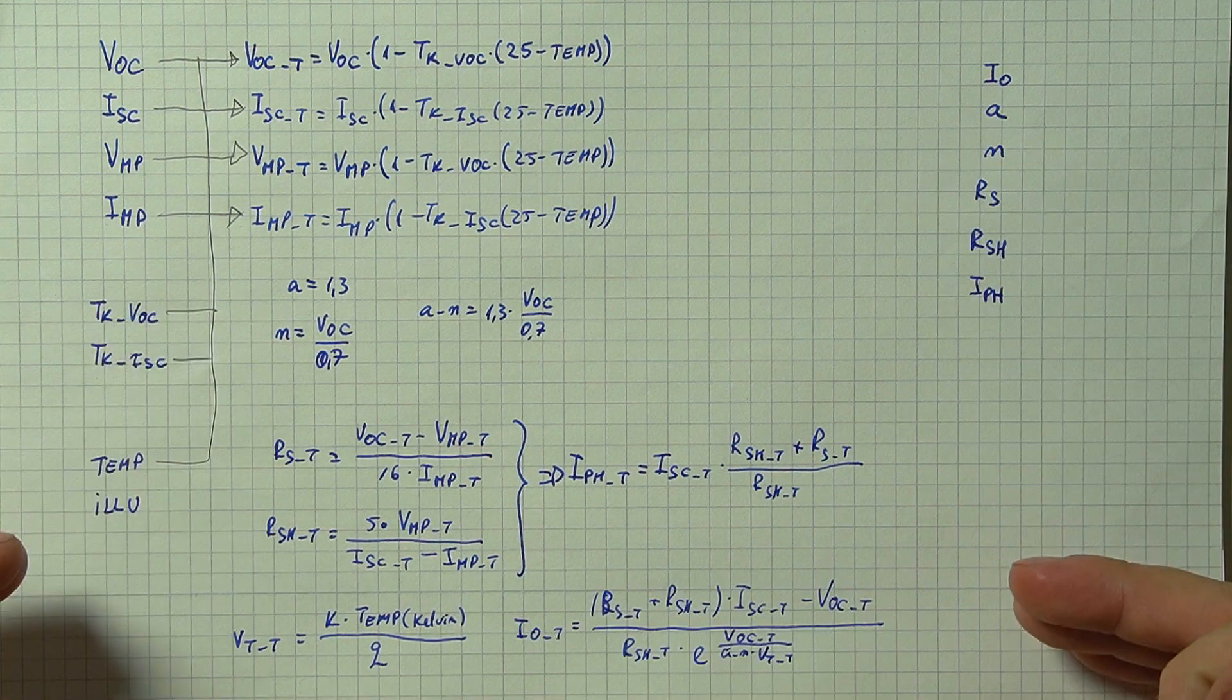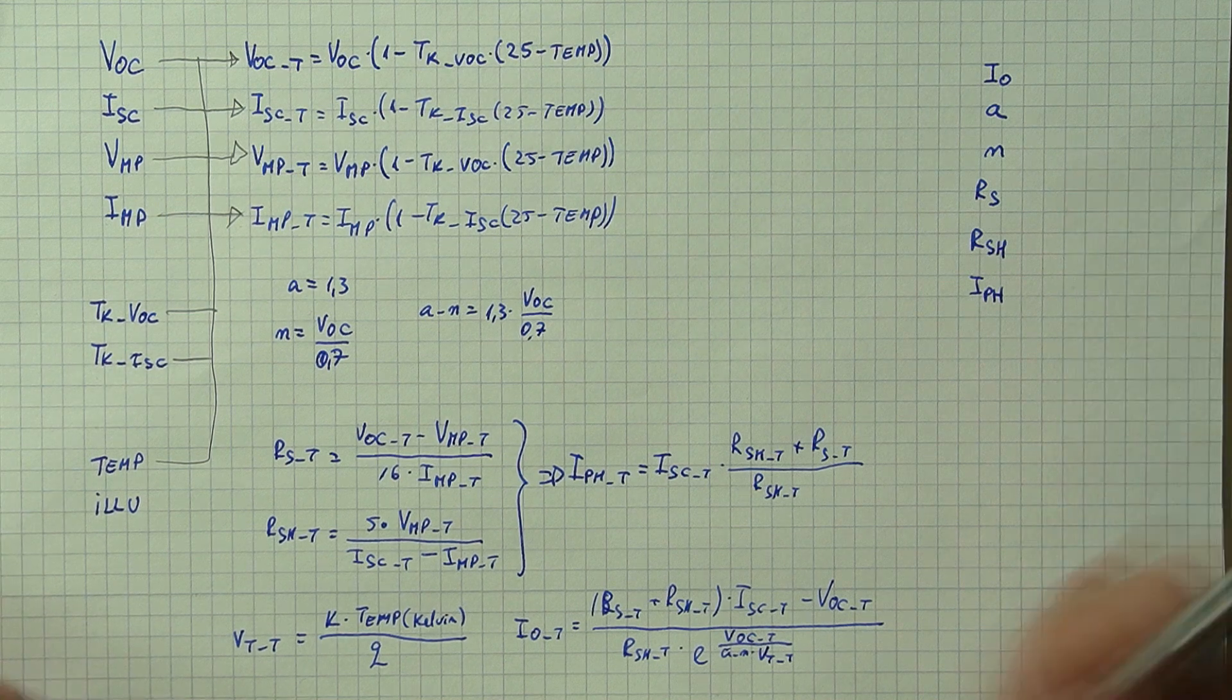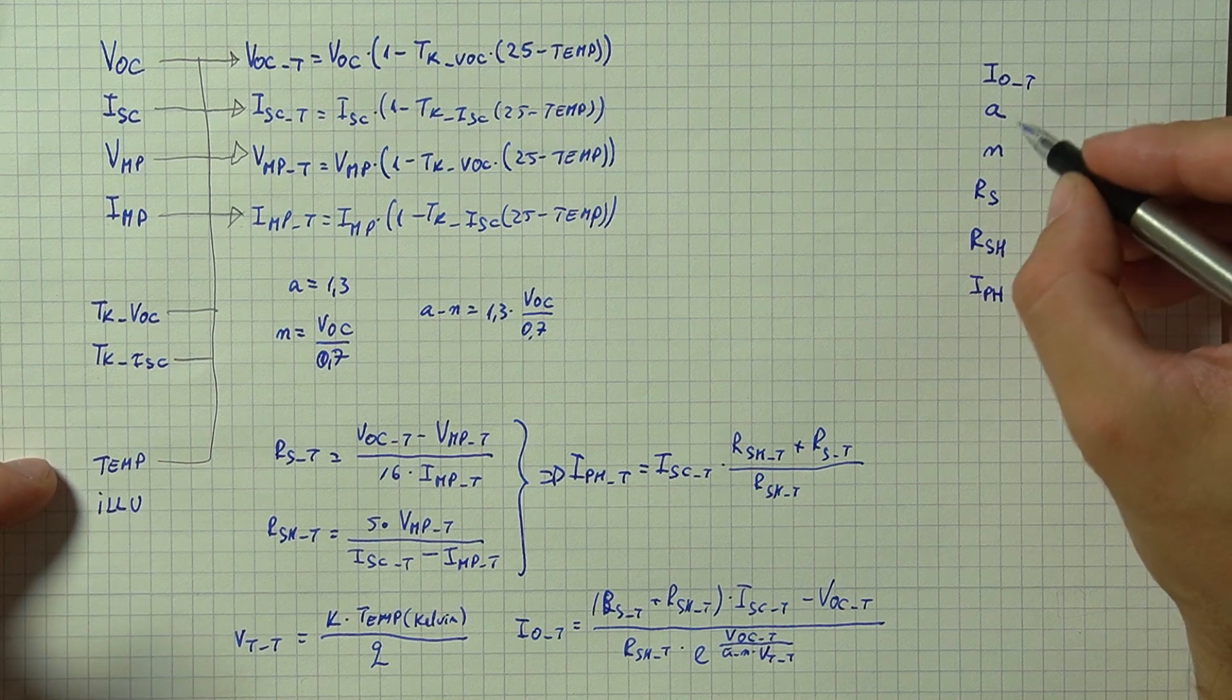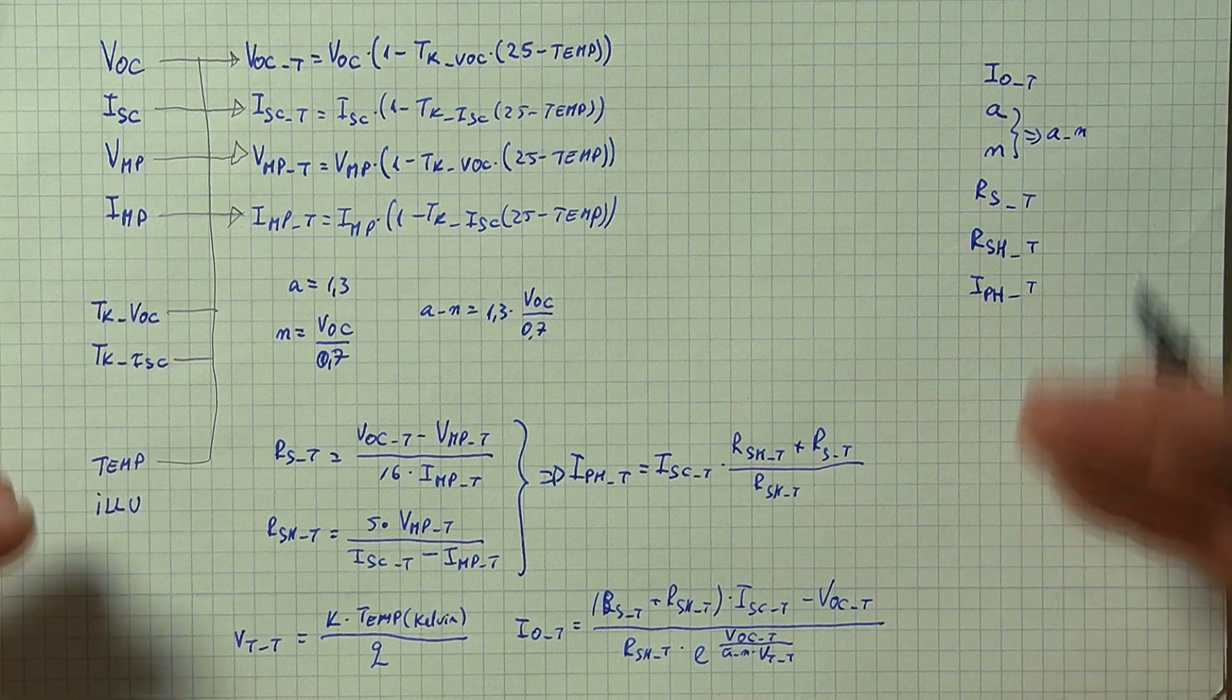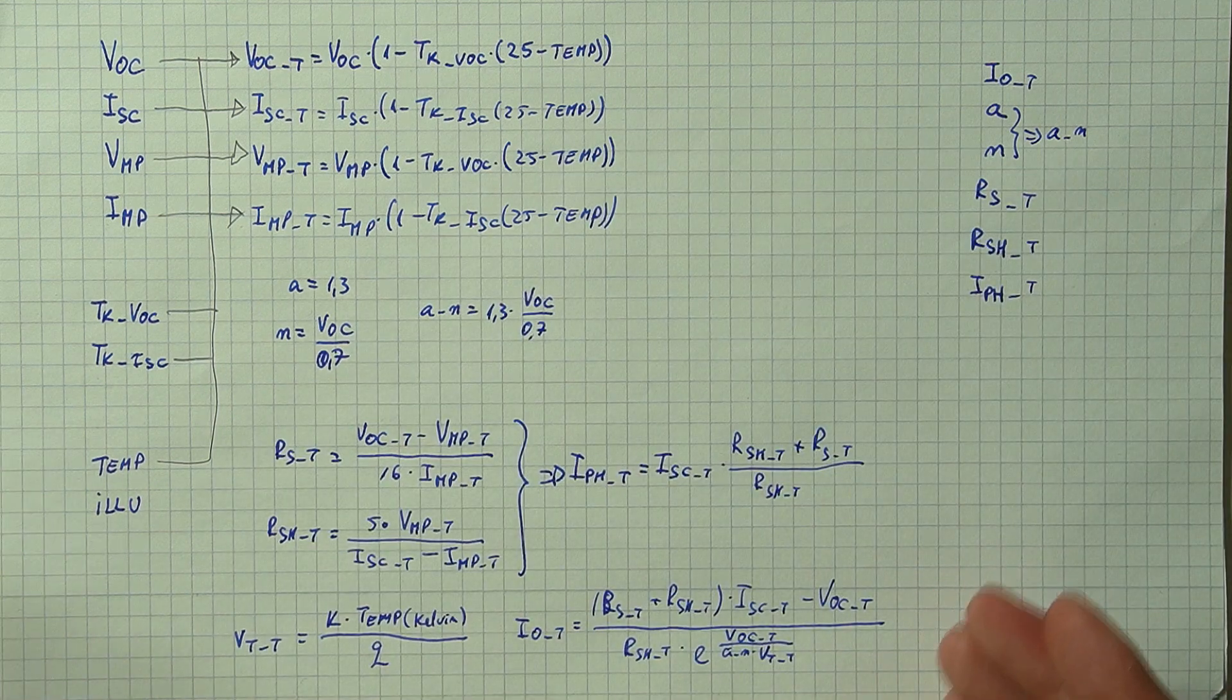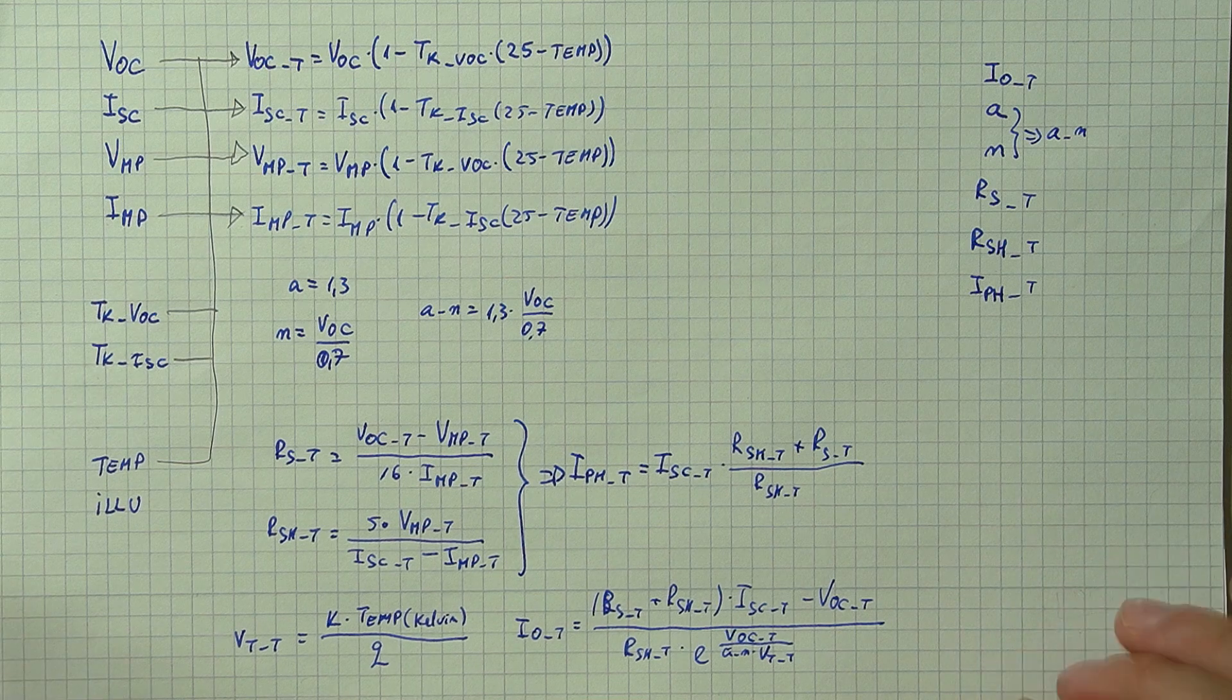And the final parameter that we still need is our dark saturation current. Just to keep the formula simple first of all we can work out the thermal voltage which is equal to the Boltzmann constant times the temperature in Kelvin divided by the electron charge and then this we use in our dark saturation current equation. And now we have all of the parameters we need for our model.